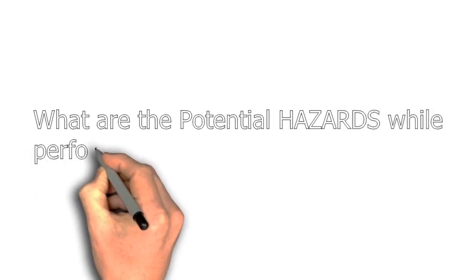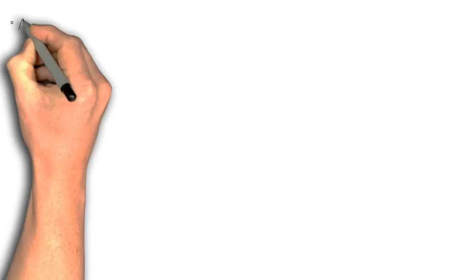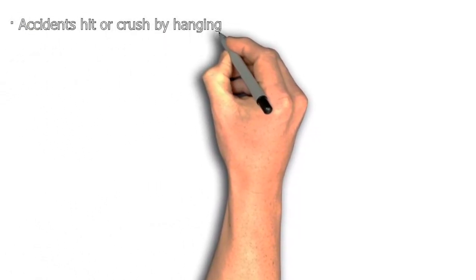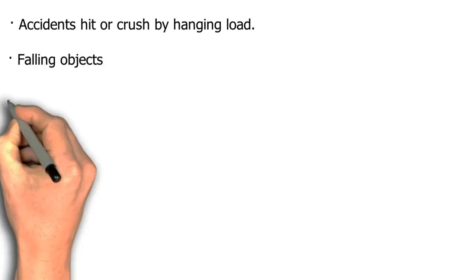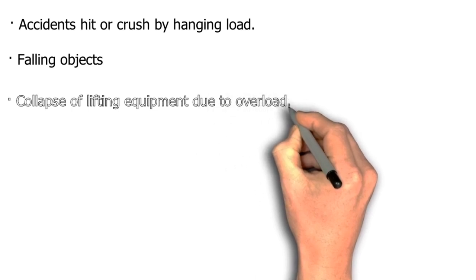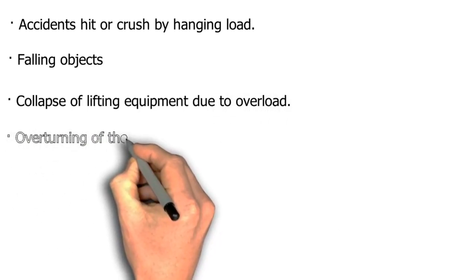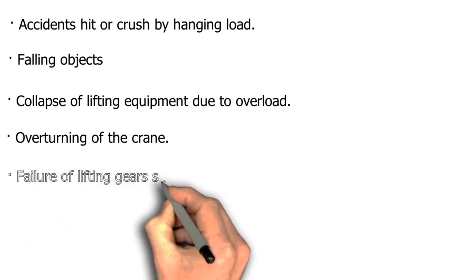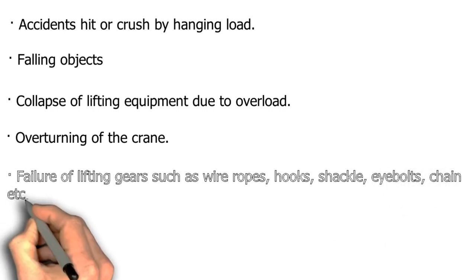What are the potential hazards of lifting operations? Accidents from being hit or crushed by hanging load; falling objects; collapse of lifting equipment due to overload; overturning of the crane; failure of lifting gear such as wire ropes, hooks, shackles, eye bolts, chain, etc.